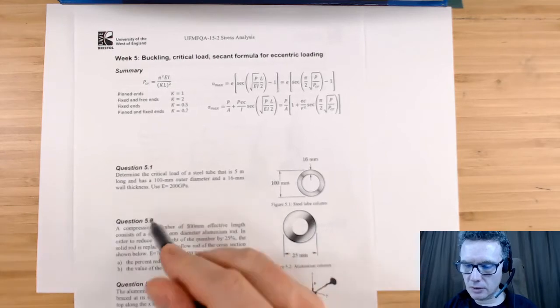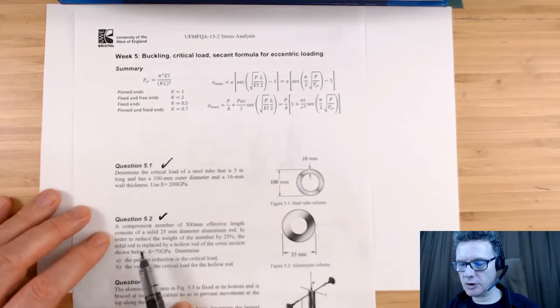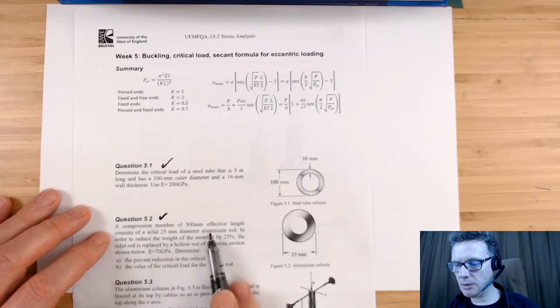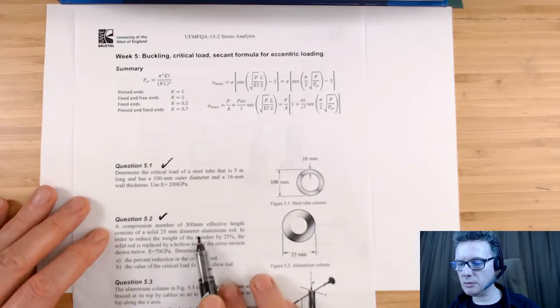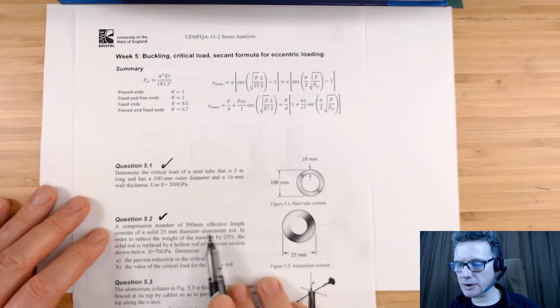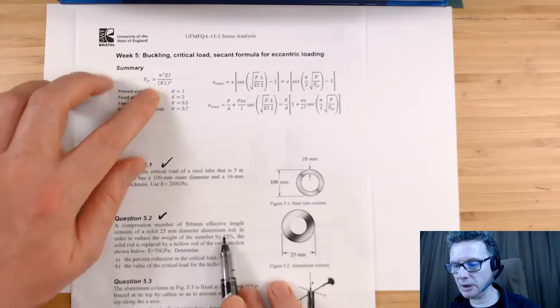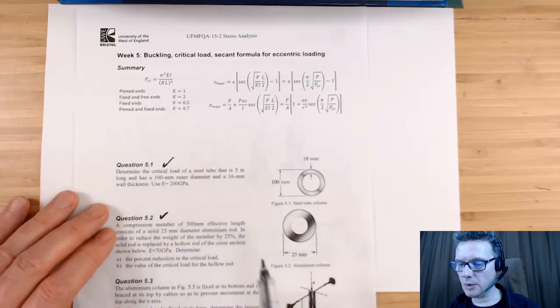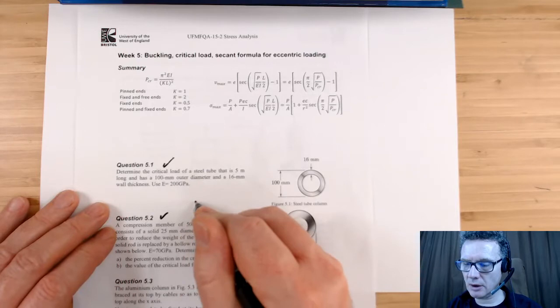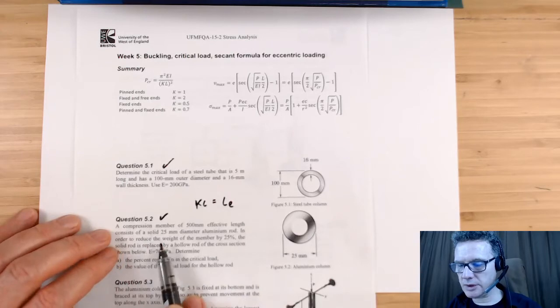Okay, so let's go for 5.2. We've got a compression member, 500 millimeters effective length. So that tells me I don't need to worry about the K. When I see effective length, that means KL equals that—effective length consists of that.